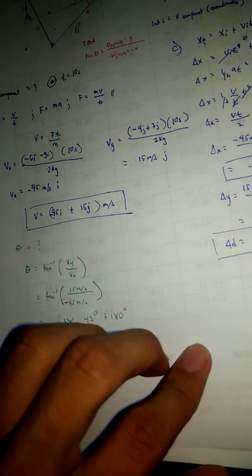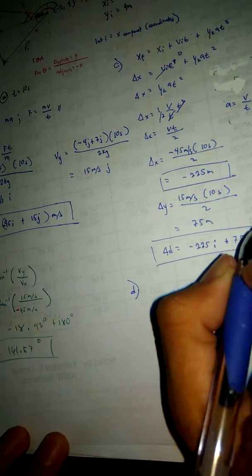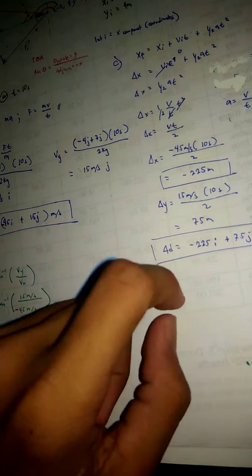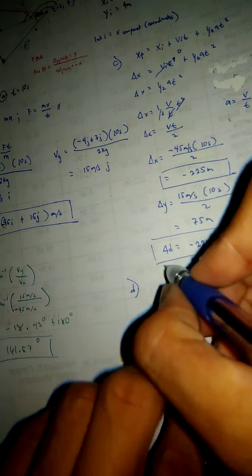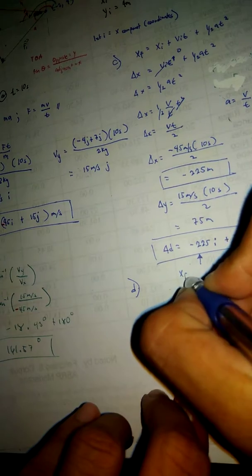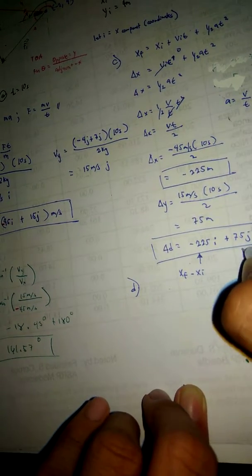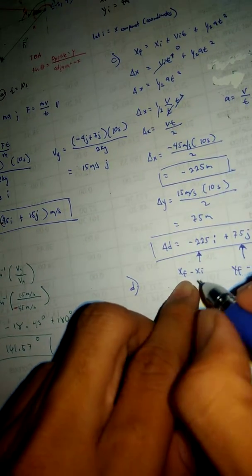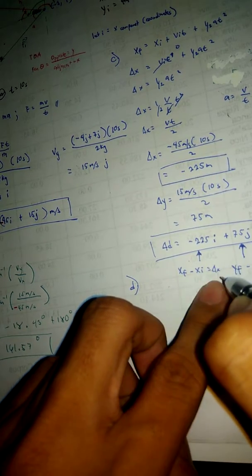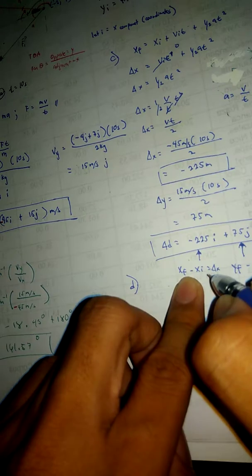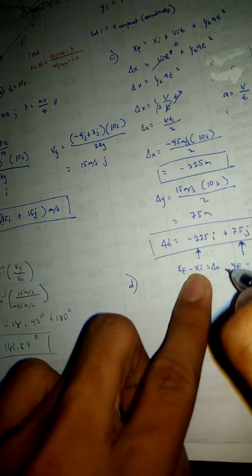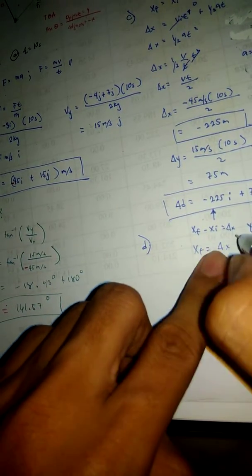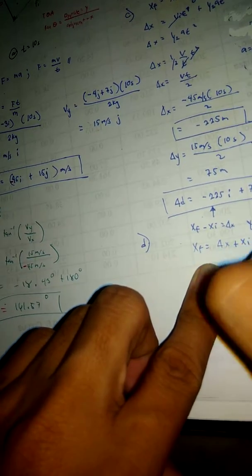For the last question, it will be an easier one. The last question is, what are the coordinates of the particle at 10 seconds? We know that this is the displacement, this is XF minus XI and this is YF minus YI. What we just need to do is find the final coordinates which is XF equals delta X plus XI.